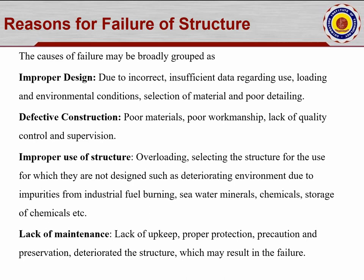Improper use of structure — for example, planning for a residential building and converting it to a goods store — causes overloading. Selecting a structure for use it was not designed for is also a cause. Lack of maintenance, lack of proper upkeep, protection, precaution, and preservation deteriorate the structure, which may result in failure. Proper protection coating depends on the locality — near the sea requires different paints, and near heavy traffic roads requires more protective coating.